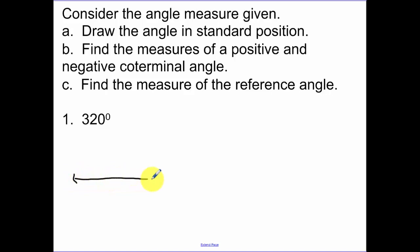So we draw in our axes. We have our initial side. And then we rotate and show me the rotation of 320 degrees. And that's landing in quadrant 4. So our terminal side is in quadrant 4.